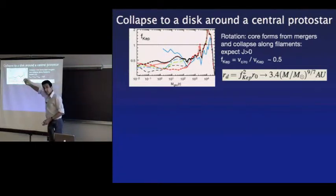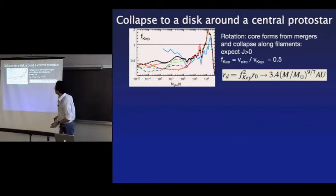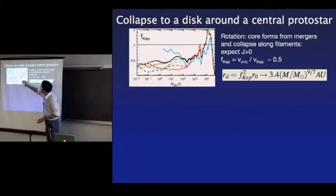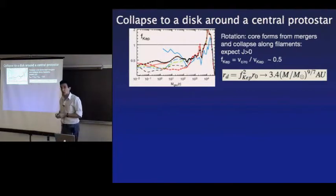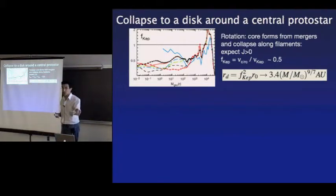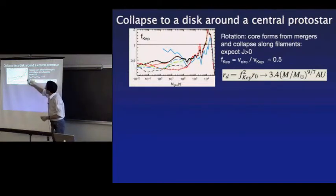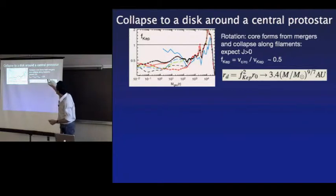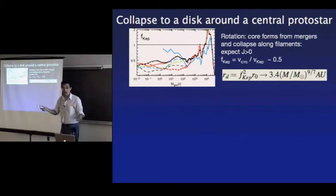In the simulations, they see the cores are rotating — it's not going to be pure spherical collapse. We can parameterize that rotation through F_Keplerian, which is the ratio of the circular velocity averaged on a mass shell to its Keplerian velocity. What's seen in the simulations is that's of order half, fairly independent of enclosed mass.